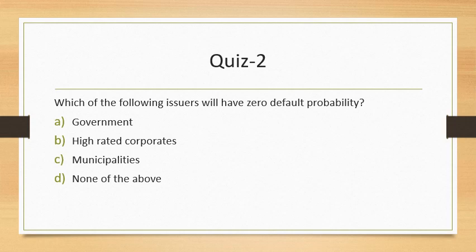Question 2: Which of the following issuers will have zero default probability? This is important because most people feel some instruments carry zero default risk. In reality, even governments are not supposed to have zero default risk, as there are instances where governments have defaulted. Neither government, high-rated corporates, nor municipalities qualify. Zero default risk probability is simply not applicable, irrespective of the type of issuer. The answer is D — none of the above.